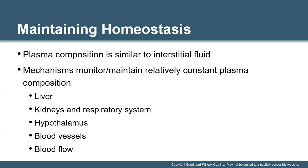Erythropoiesis is regulated by the kidneys. When blood oxygen is detected to have dropped — called hypoxia — the kidneys will secrete a hormone called EPO, erythropoietin, which stimulates stem cell production of RBCs in the red bone marrow. It takes about three to five days to get to a mature cell, and then that mature cell lasts about 120 days. Once oxygen levels rise, this is also detected by the kidneys and the process slows down. Iron, folic acid, B12, and protein are needed for RBC production, as well as red bone marrow.